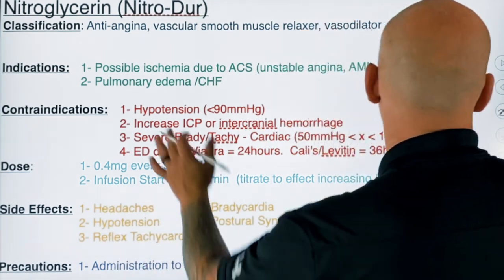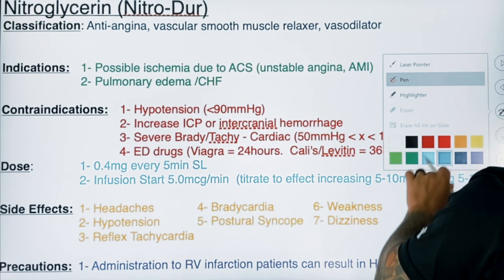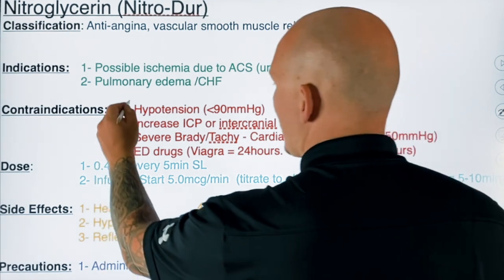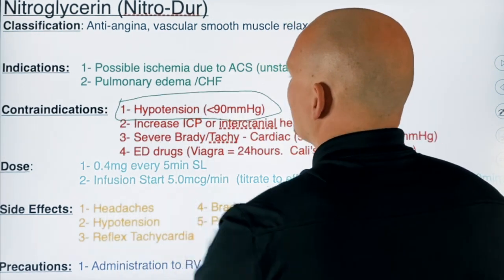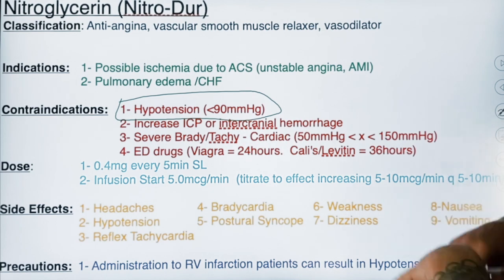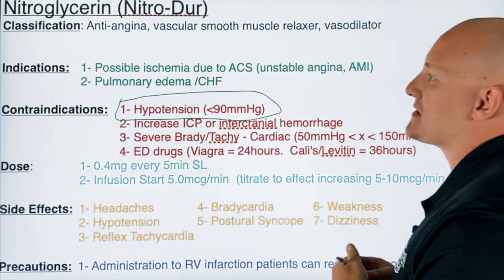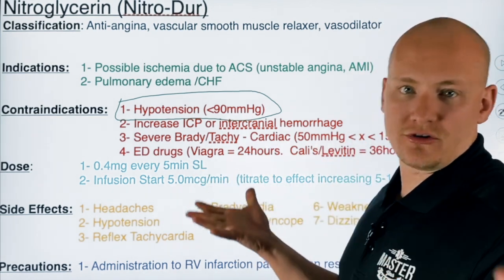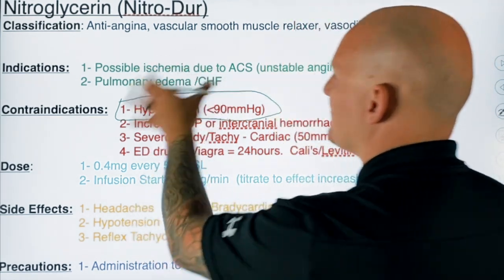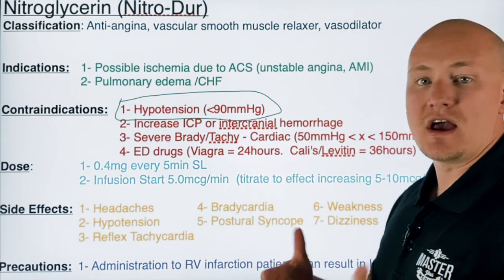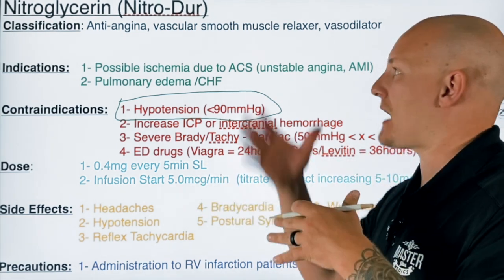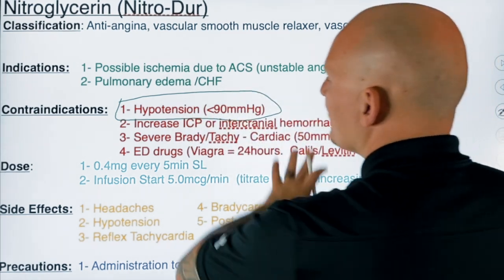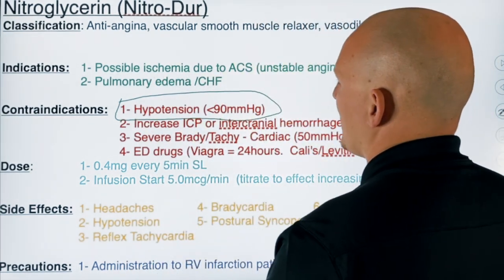Big contraindications to watch out for: hypotension is going to be one of the bigger ones. Since the mechanism causes vasodilation, if we have a hypotensive patient and we create more vasodilation, we can have a pretty detrimental situation causing severe decreases in perfusion. We'll talk about why nitroglycerin can be very dangerous in inferior myocardial infarctions in a later video.